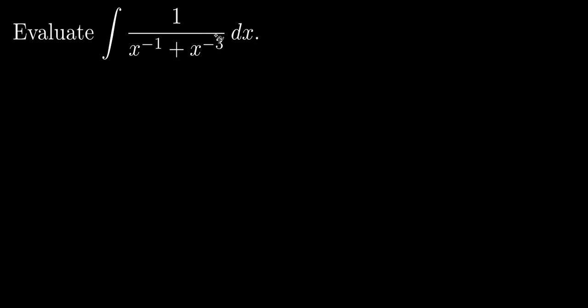I'm going to multiply and divide by some power of x so that the denominator doesn't have two powers of x but will end up having one power of x and a constant.